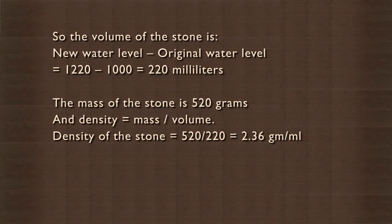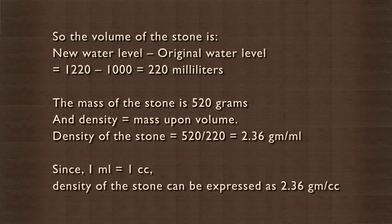Density of the stone is 520 divided by 220, which is 2.36 grams per milliliter. Since 1 milliliter is equal to 1 cc, the density of the stone can be expressed as 2.36 grams per cc.